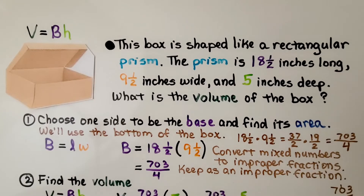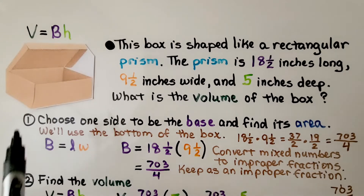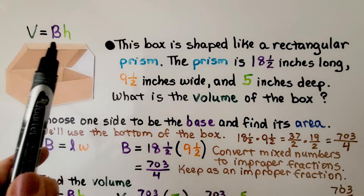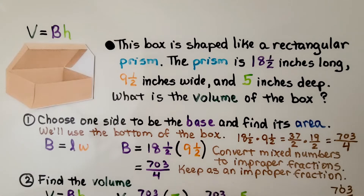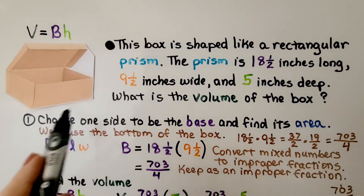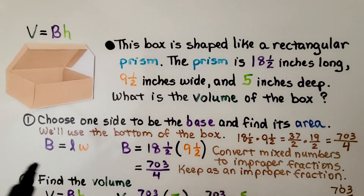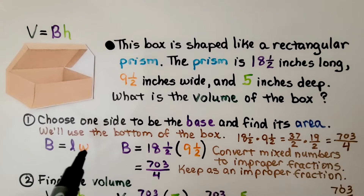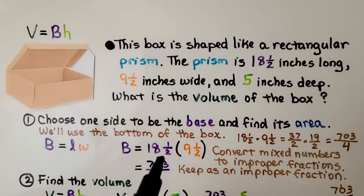This box is shaped like a rectangular prism. The prism is 18.5 inches long, 9.5 inches wide, and 5 inches deep. What is the volume of the box? We can use volume equals base times height. The first thing we do is choose one side to be the base and find its area. We can use the bottom of the box, and we're going to multiply 18.5 by 9.5. The first thing we do is convert the mixed numbers to improper fractions.